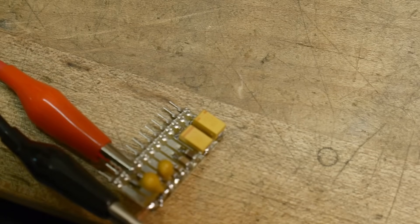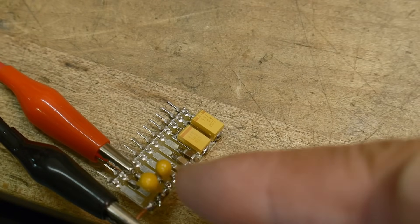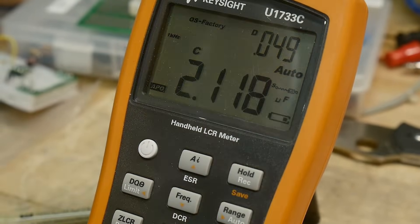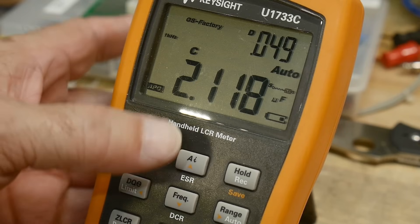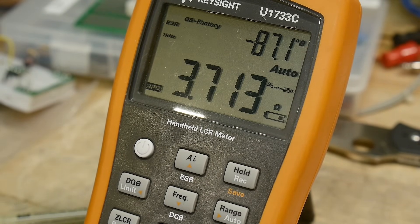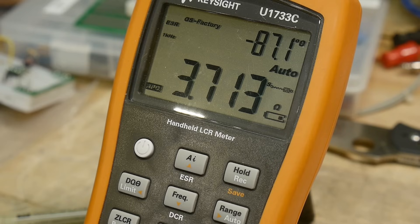This is a dipped tantalum also. All right, so I've gone over the next dipped tantalum. It is a 2.2 microfarad capacitor and we are measuring 2.1. Let's measure the ESR of this one. And it's measuring 3.7 ohms.